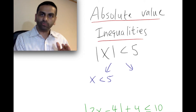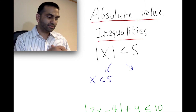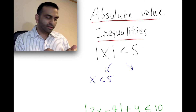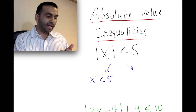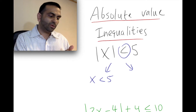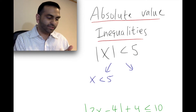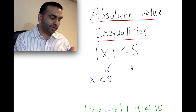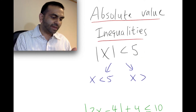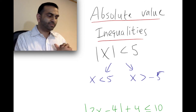In the second case, we do two things: the right-hand side becomes negative, and you also flip the inequality. So we're getting rid of the absolute value, and we write: x greater than negative five. So those are our two results.